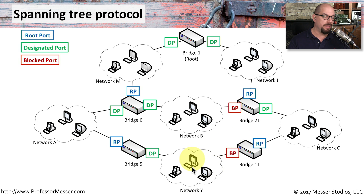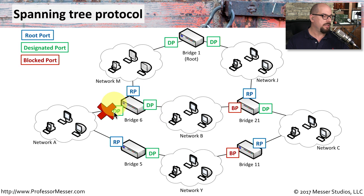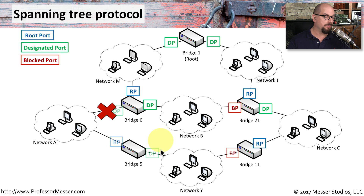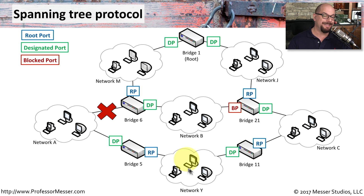There is a blocked port heading the other direction to prevent loops. But what if a connection is lost? If a connection between network A and bridge six becomes unavailable, Spanning Tree will recognize the change and reconfigure bridge five and bridge 11 to allow traffic to traverse the other direction around the problem. So Spanning Tree not only keeps the network available, it also prevents loops and downtime.